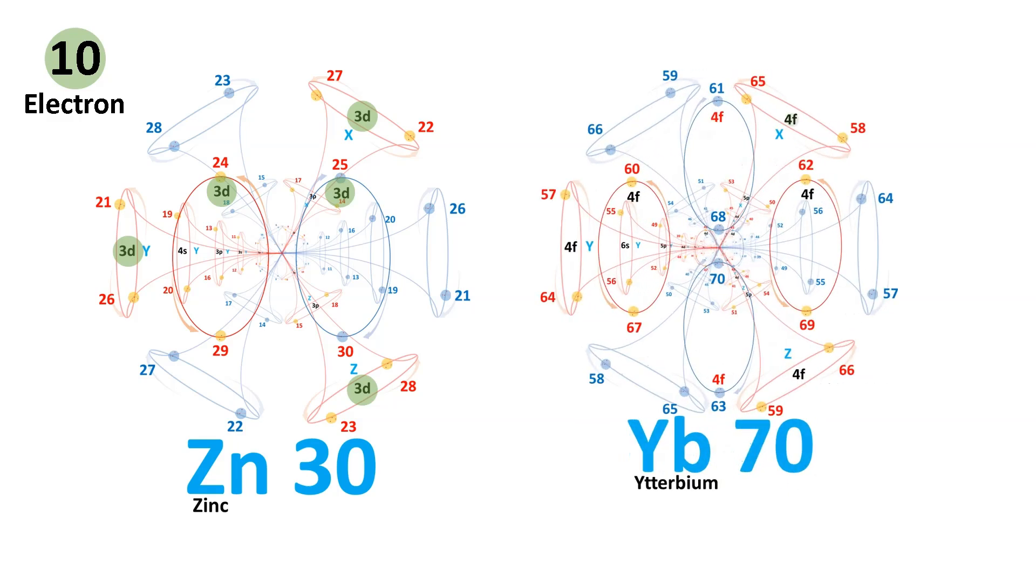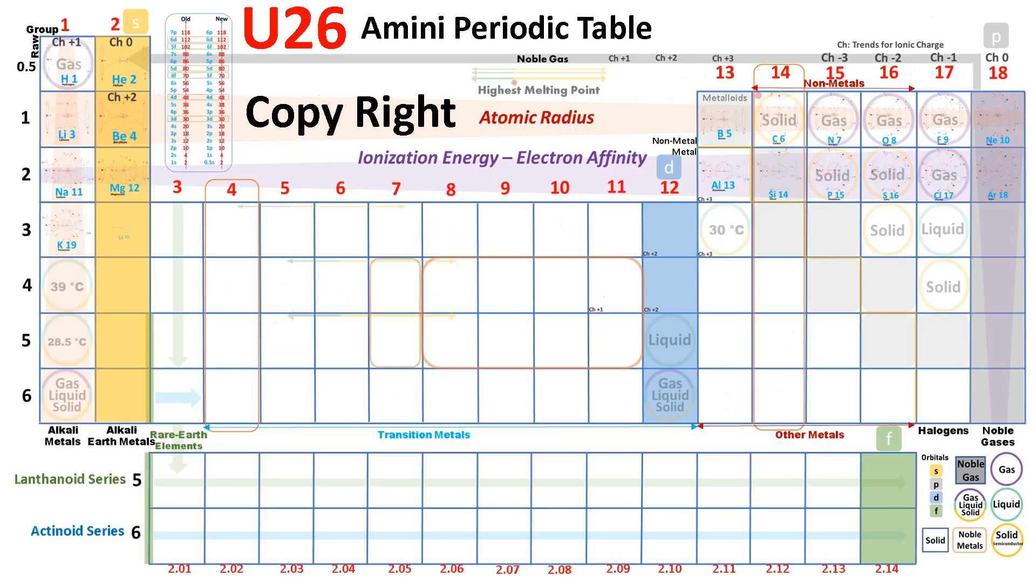The journey continues to the 4f orbitals, composed of seven loop-shaped orbitals. The f orbitals have the capacity for up to 14 electrons and 14 positrons. In this manner, we can conclude the Amini periodic table by introducing several new and larger orbits.